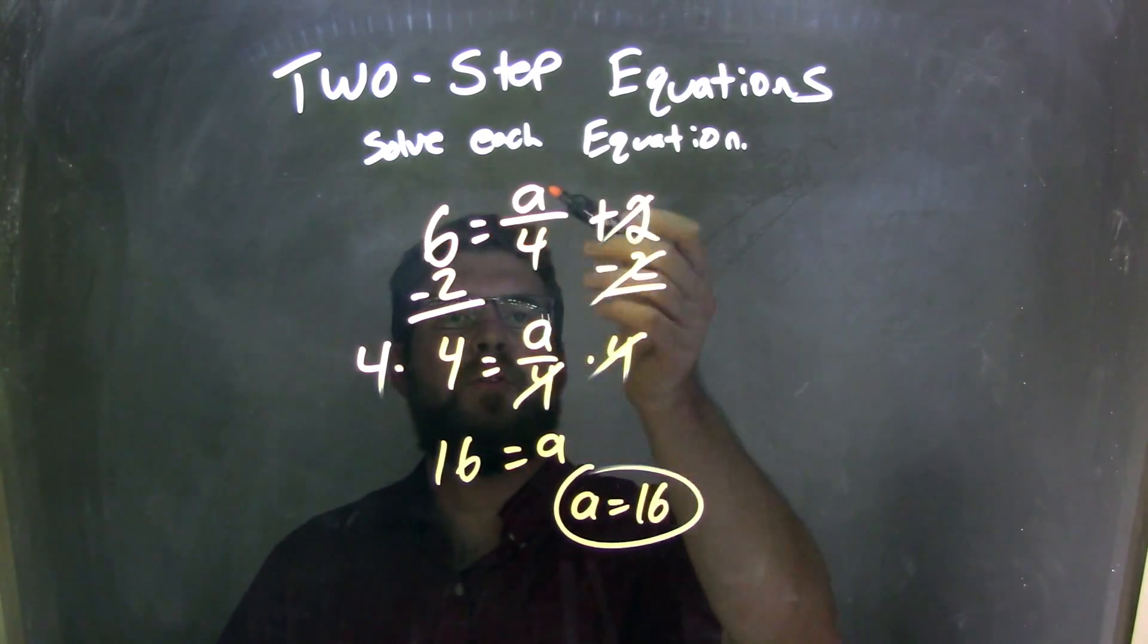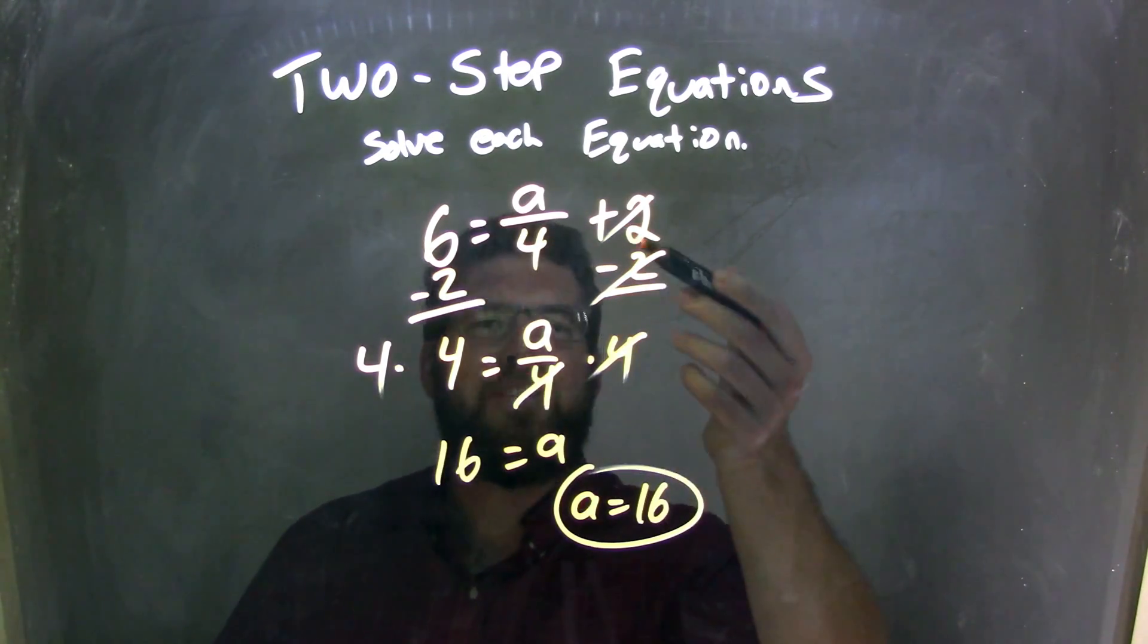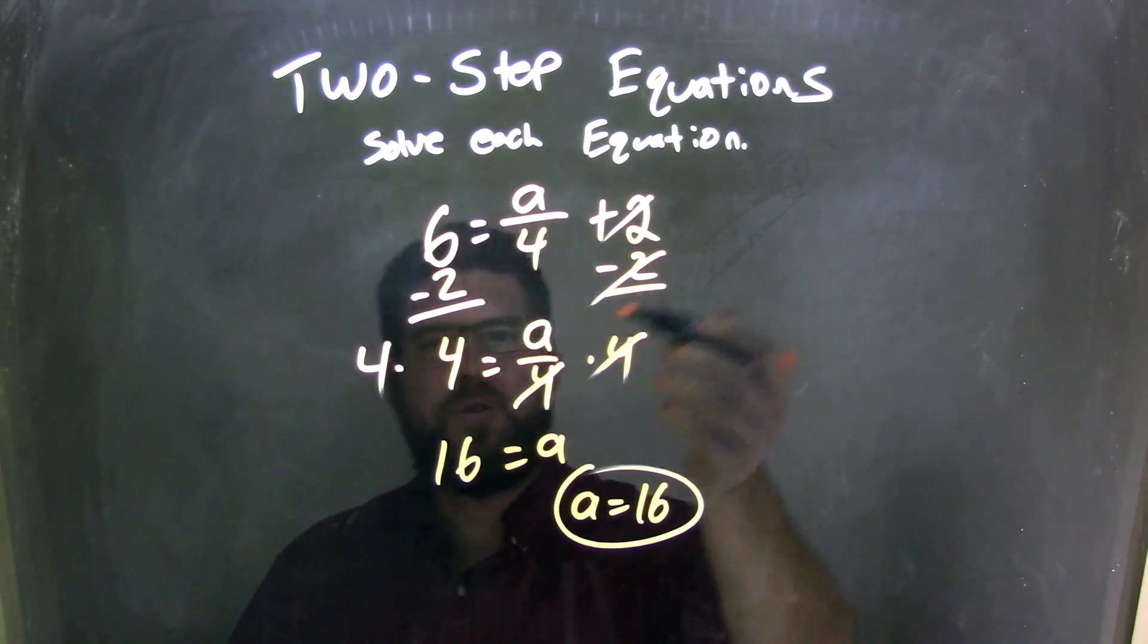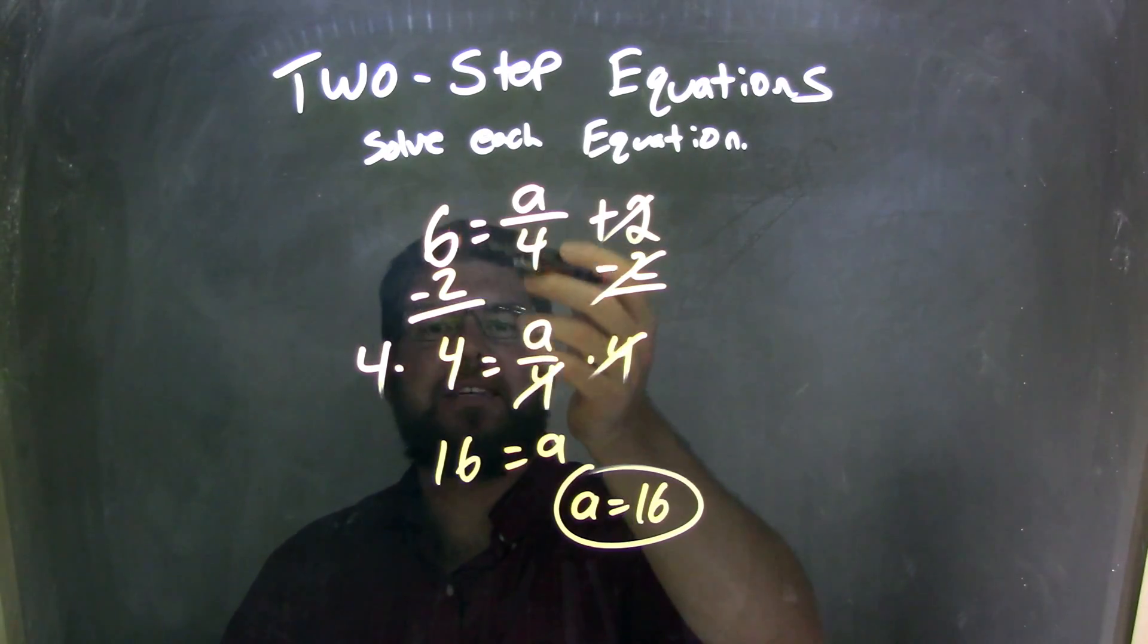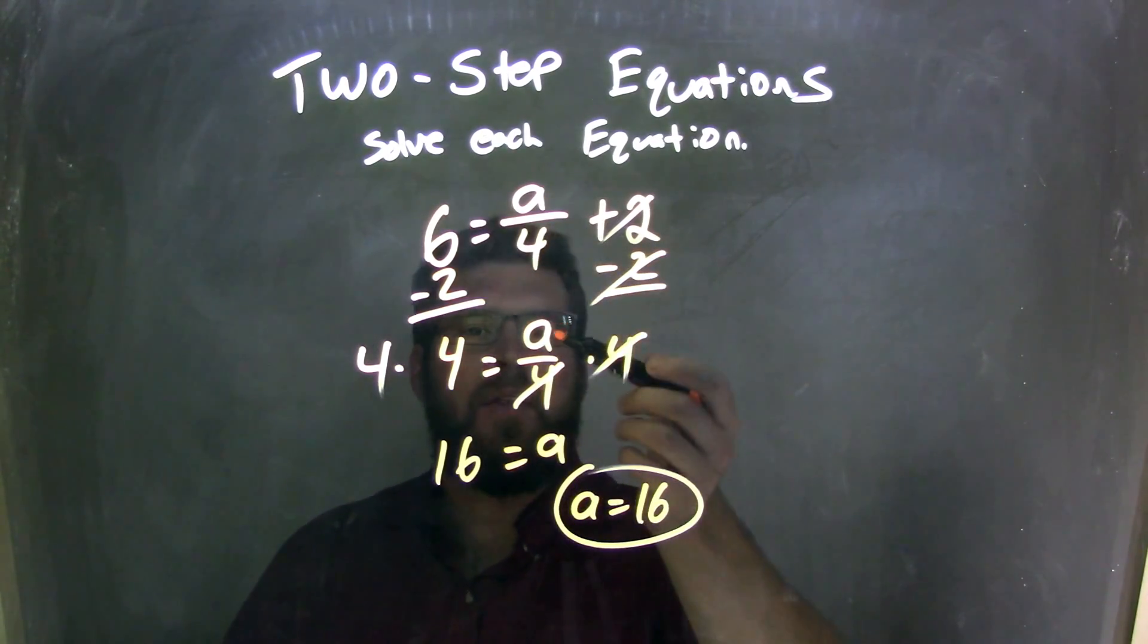So let's recap. We started with 6 equals A over 4 plus 2. I subtracted a 2 first to get 2 to the other side. I'm left with 6 minus 2, which is 4, and I brought it down to A over 4.